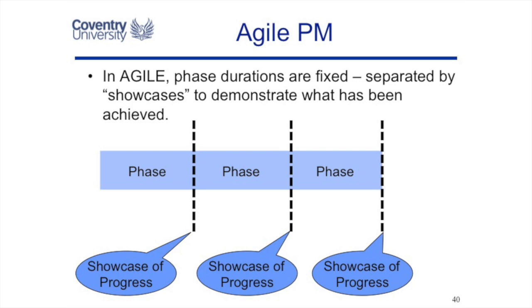Agile project management says let's have equal durations for the phases. Let's set these phases at two weeks or one month and let's have review of progress on a regular basis. By doing this we're clearly saying we want to see regular progress at key events — it's not just a sign-off by management at the milestone, it is a demonstration or a showcase of what has been achieved. Agile comes out of the software project management world, so a demonstration of working software in a showcase is a very logical thing to do.